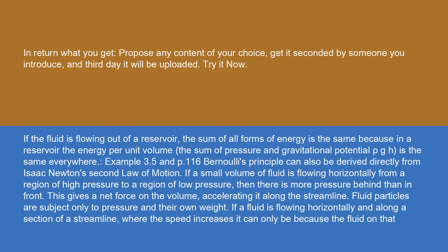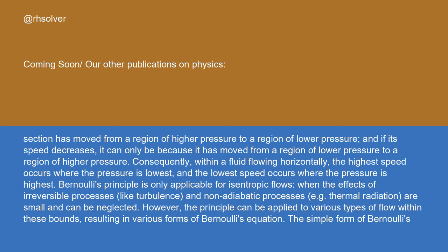Fluid particles are subject only to pressure and their own weight. If a fluid is flowing horizontally along a section of a streamline where the speed increases, it can only be because the fluid has moved from a region of higher pressure to a region of lower pressure, and vice versa. Consequently, within a fluid flowing horizontally, the highest speed occurs where the pressure is lowest, and the lowest speed occurs where the pressure is highest.